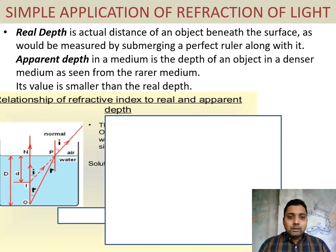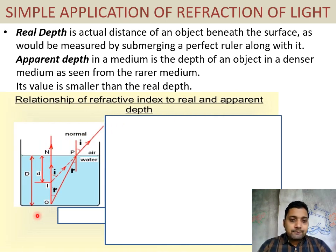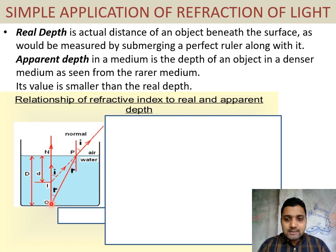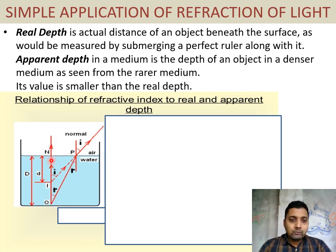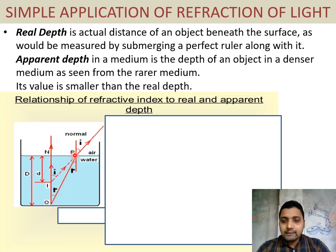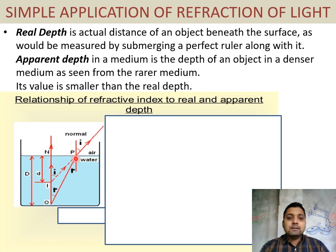Consider an object O inside water and an observer in air. When the observer looks straight down, there is no refraction because the angle of incidence is 0, so the light travels straight along ON, giving the real depth as the distance ON from the surface to O. A light ray from O strikes the boundary at point B and, going from water to air — denser to rarer — bends away from the normal. The observer in air traces this refracted ray back and perceives the object at a shallower position — the apparent depth.